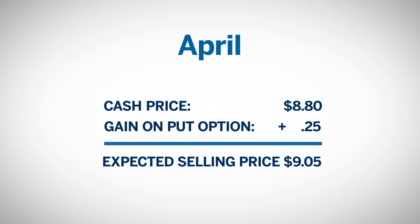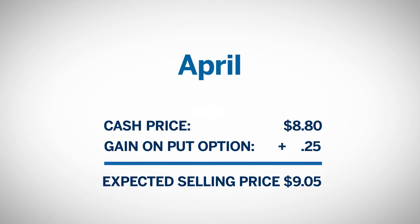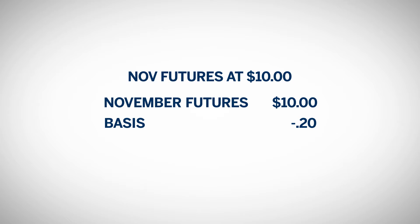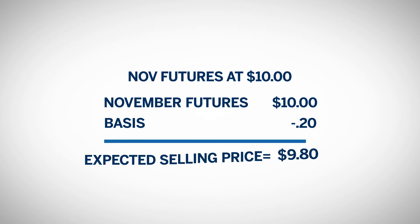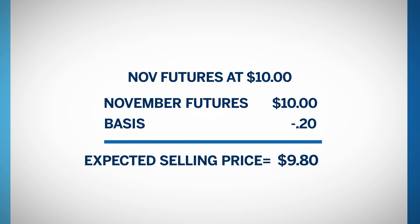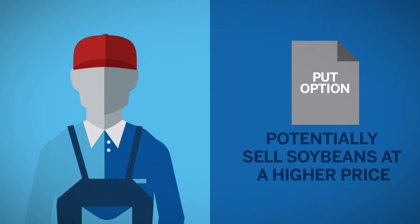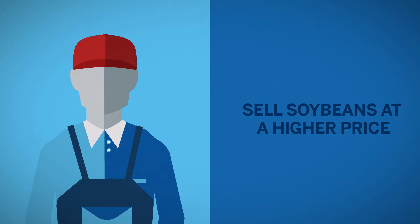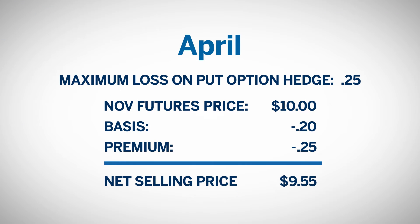But suppose the November soybean futures price rises above the $9.50 strike price. In this situation, the farmer will still be able to participate in the upward price movement. For example, if November futures increased to $10 a bushel, taking into account the $0.20 under expected basis, the cash price in the producer's area would be $9.80. Since the $10 futures price is higher than the $9.50 strike price of the put option, the farmer allows the option to expire and sells his soybeans in the cash market. The most he will lose is the $0.25 premium he paid up front. His net selling price will be $9.55, which is the futures price of $10 minus the $0.20 under basis minus the $0.25 premium.